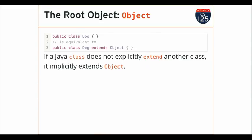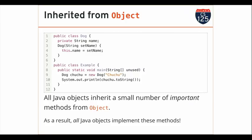If you extend another class and keep going up to the parent's parent, you will eventually get to Object. This explains the mystery from last time: why does an object I create have a toString method I haven't defined anywhere? It turns out there are a small but extremely important number of methods that the Object class implements, and so every Java object has these methods.